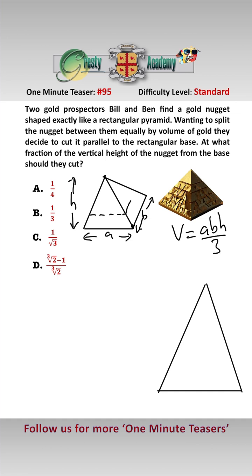What we need to do is cut it parallel to the rectangular base so that this mini pyramid here has half the volume. Well, using similar triangles we know that the volume of the mini pyramid is